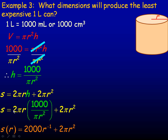After substituting, this simplifies considerably. Two times a thousand is two thousand, the π's cancel, and we have r over r-squared. Since we subtract exponents, r¹ over r² gives r to the negative one, so that term becomes 2000r⁻¹. Plus, of course, the 2πr² term, which is already in terms of just r.